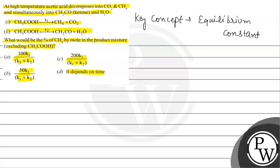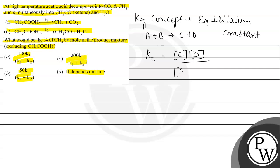The equilibrium constant Kc is equal to the product of the concentrations of the products divided by the product of the concentrations of the reactants. For a reaction A + B → C + D, it will be the concentration of C times D divided by the concentration of A times B.